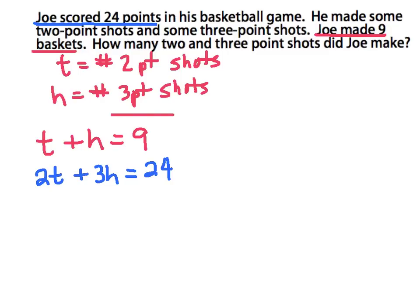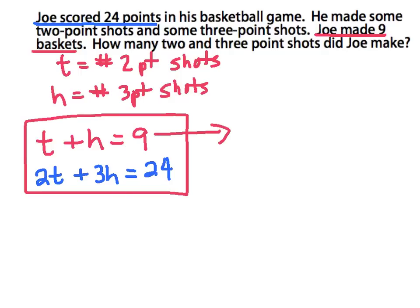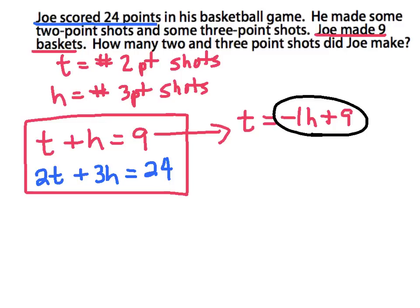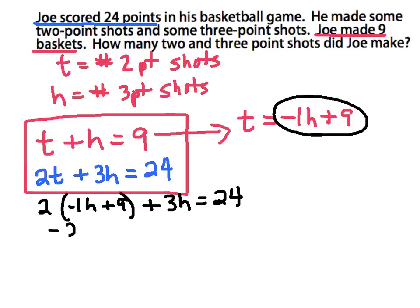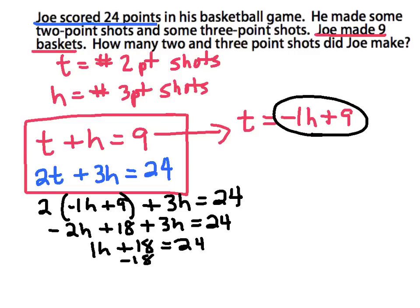In this system none of my variables are isolated, so I need to isolate one. The top equation looks easy — I'm going to subtract H on both sides and say T equals negative 1H plus 9. I can then substitute that into my second equation in place of T, giving me 2 times negative 1H plus 9 plus 3H equals 24. Distributing, I get negative 2H plus 18 plus 3H equals 24. Combining like terms: 1H plus 18 equals 24. Subtracting 18 on both sides gives 1H equals 6, meaning Joe made 6 three-point shots.